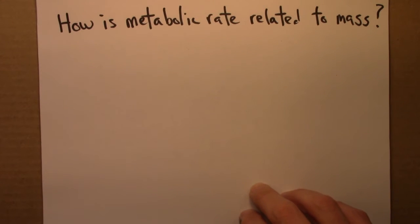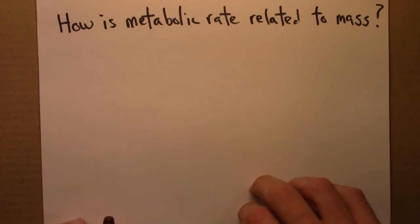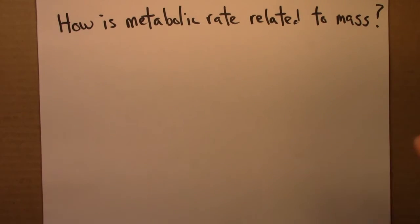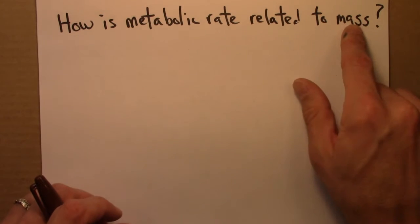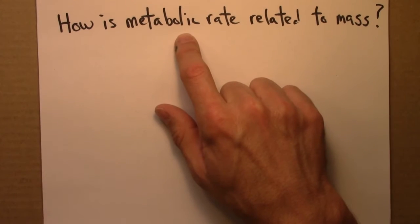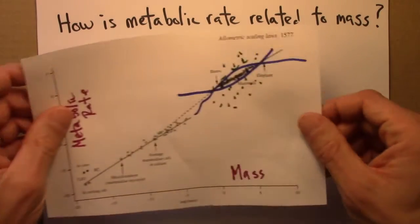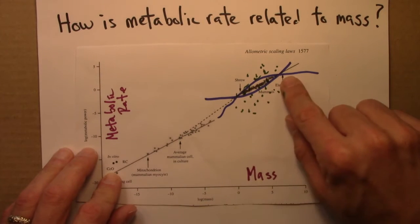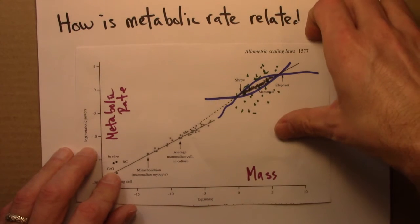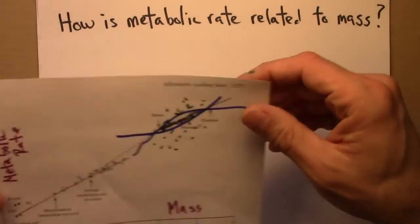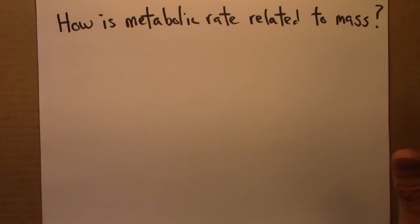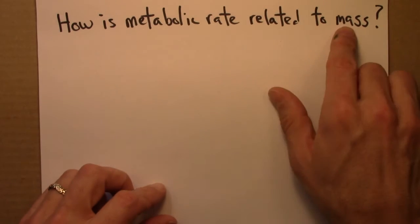The starting point for metabolic scaling is to think about how the metabolic rate is related to mass — the mass of some organism. We want to know the relationship between the organism's mass and its metabolic rate. As we've seen with Kleiber's law, from the previous video, there is indeed a nice scaling relationship. So let's think about what we might expect that relationship to be, and some different ways of predicting what it might be.